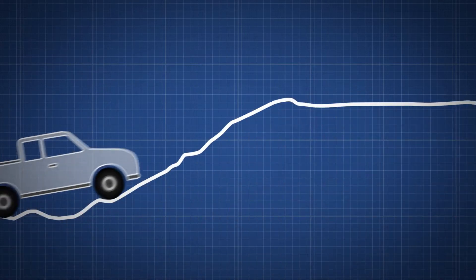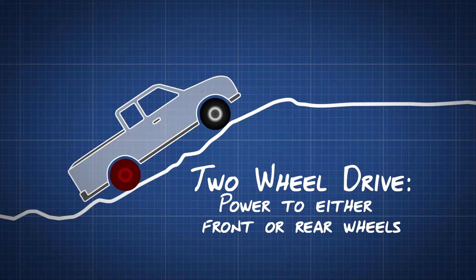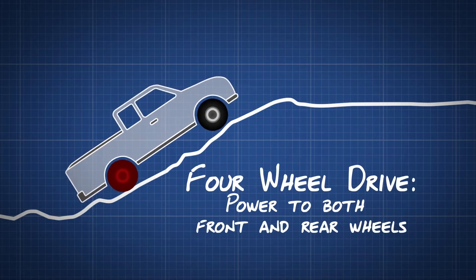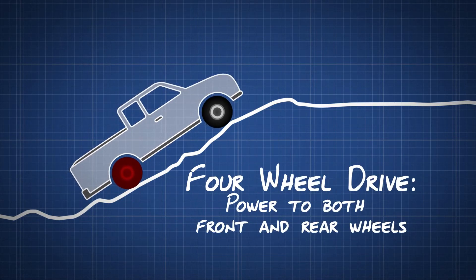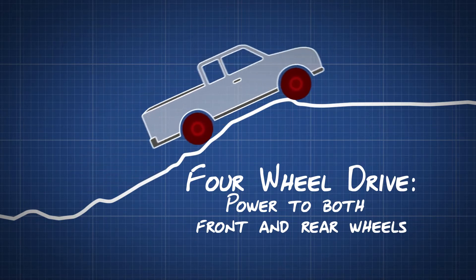Unlike a two-wheel drive car, where the power goes either to the front or rear wheels, four-wheel drive works by sending power from the engine to all four wheels. This means that all the wheels are powered, which gives the vehicle more stability and power.